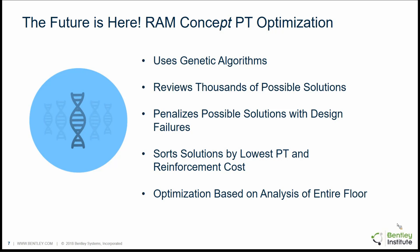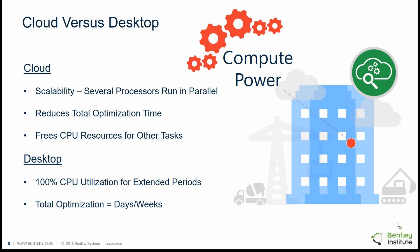How does it work? We use genetic algorithms to review thousands of possible design solutions. Possible solutions with design code failures are automatically weeded out by penalizing them. All valid solutions are sorted by lowest post-tensioning and reinforcement cost, and it's easy to select and compare them to the best design. The optimization process is completed on the analysis of the entire floor, so changes in a given span that affect behavior in the opposite direction are always accounted for. This process needs to be done in the cloud because we need to use several processors in parallel to decrease the optimization time.